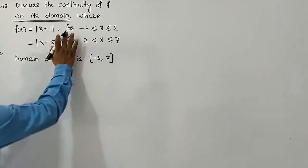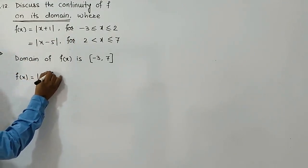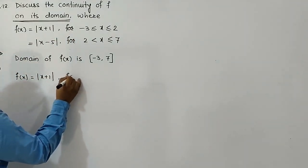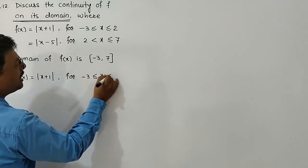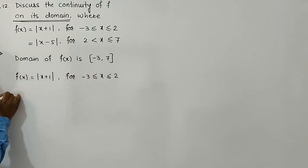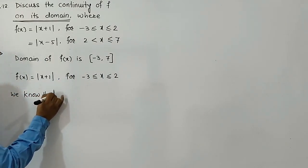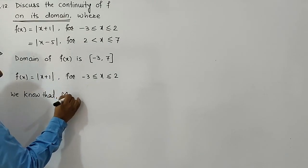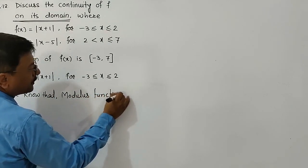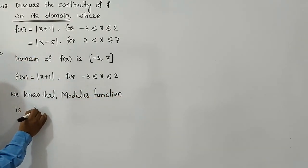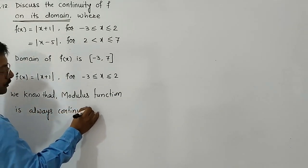We will write first: f(x) = |x+1| for -3 ≤ x ≤ 2. We know that the modulus function is always continuous on its domain.